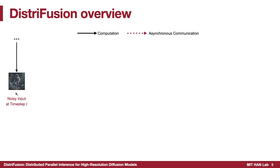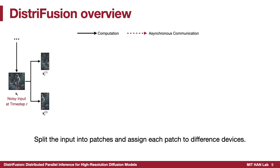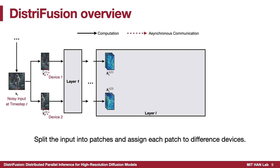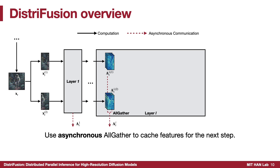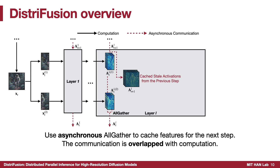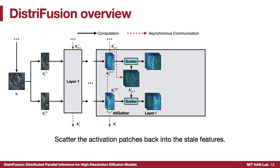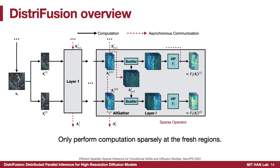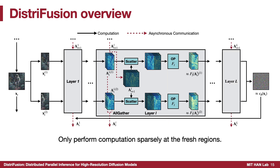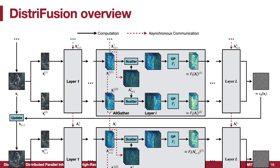When we get the input for time step T, we first split it into patches across devices and feed them into the model layer by layer. At layer L, each device will have an activation patch. We first use an asynchronous all-gather to concatenate and cache the features for the next step. Note this communication is overlapped with computation, and the current step should have already received the cached stale activations from the previous step. We then scatter the activation patches back into the stale features, and only perform computation sparsely at the fresh regions. Finally, we get the predicted noise and x_{t-1}, and repeat this process for the following time steps.